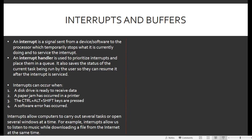Interrupts can occur when: 1. A disk drive is ready to receive data. 2. A paper jam has occurred in the printer. 3. The Ctrl-Alt-Shift keys are pressed. 4. A software error has occurred. Interrupts allow computers to carry out several tasks or open several windows at a time — for example, interrupts allow us to listen to music while downloading a file from the internet at the same time.